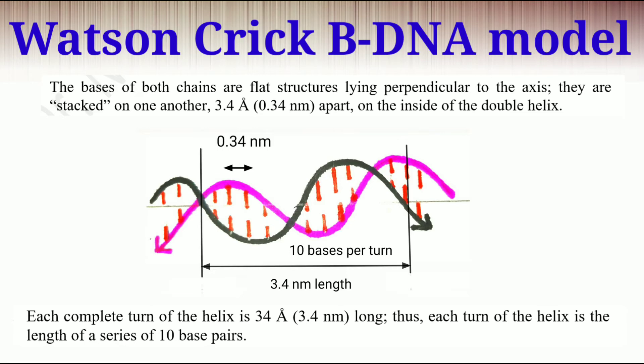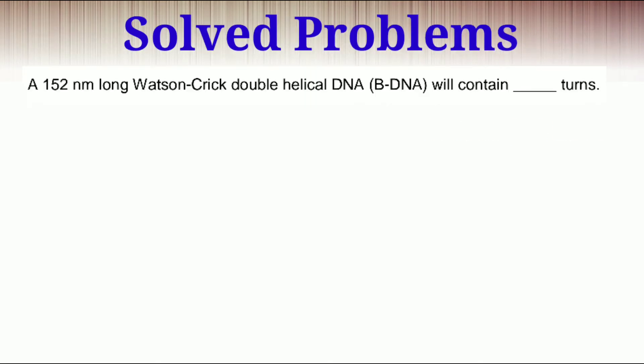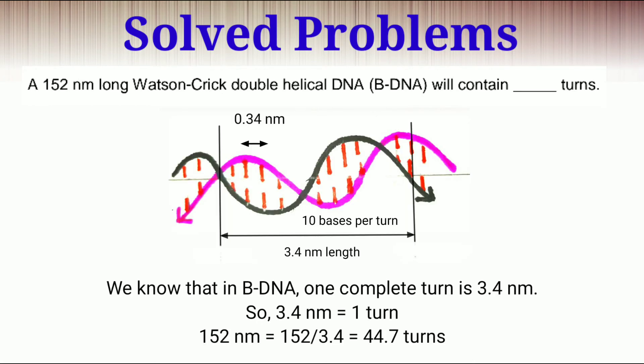So from this data, you can easily calculate the length of the DNA if you know how many bases are there. Here is one numerical problem. In this problem, the DNA is 152 nanometer long and you have to calculate how many turns it contains. We know that in B-DNA, 3.4 nanometer is equal to one turn. So in 152 nanometer, there is 152 by 3.4 or 44.70 turns are there.